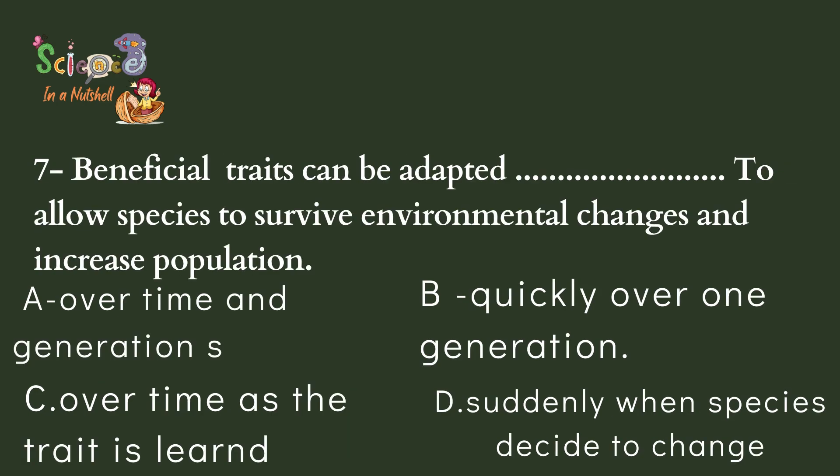Question number seven: Beneficial traits can be adapted to allow species to survive environmental change and increase in population — how? Is it over time and generations, quickly, over one generation, over time as the trait is learned and taught to others, or suddenly when a species decides to change? Traits can be changed over many time periods and generations — it needs a big amount of time. So the correct answer is A — over time and generations.